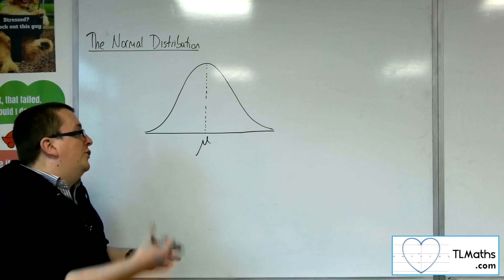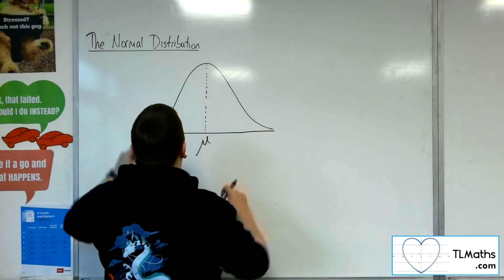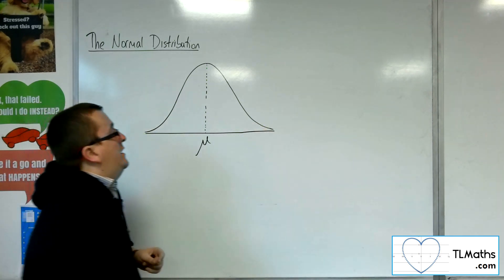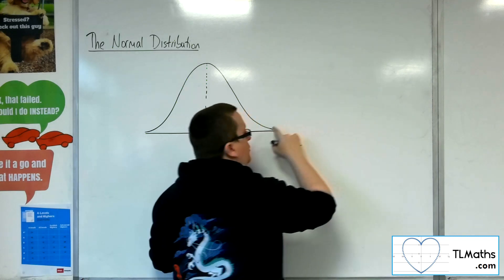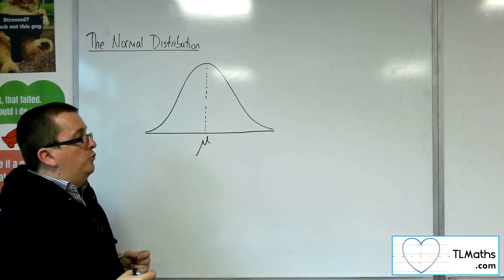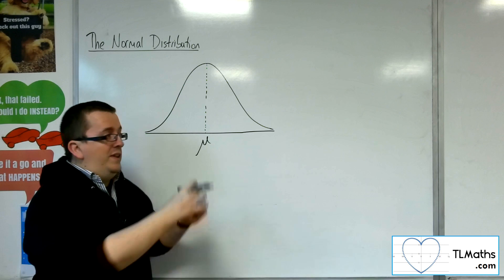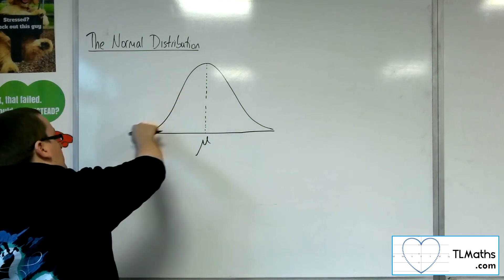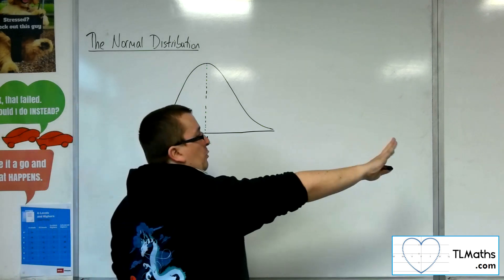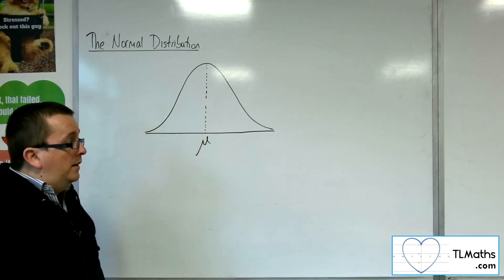Now, the way that I've drawn it, it looks like the distribution just ends here, but actually these are asymptotes. The curve continues to get closer and closer to the x-axis. Okay, and likewise in this direction as well. Okay, so the probabilities get smaller and smaller the further away you are.